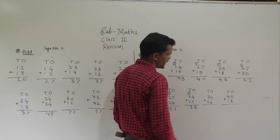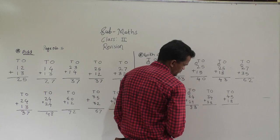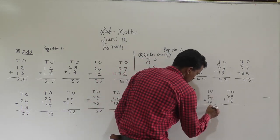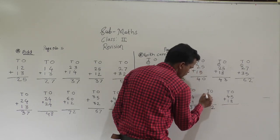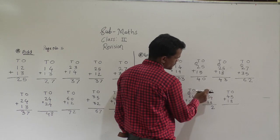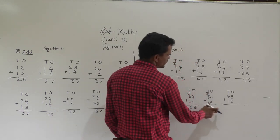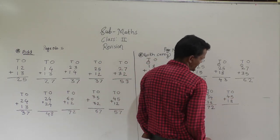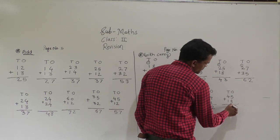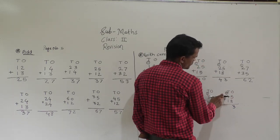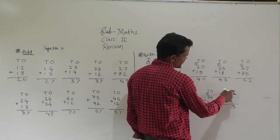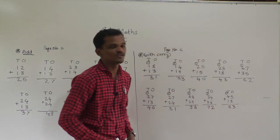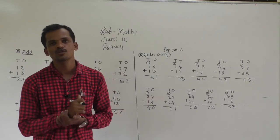Then 34 plus 38: 4 plus 8 is 12 — write 2 here and carry 1. 3 plus 3 is 6, plus 1 carry is 7. So 72 is the answer. Then 45 plus 18: 5 plus 8 is 13 — write 3 here and carry 1 forward. Then add the tens column: 4 plus 1 is 5, plus 1 carry is 6. So 63 is the answer. These are very simple examples — the remaining examples you have to solve on your own. Thank you.